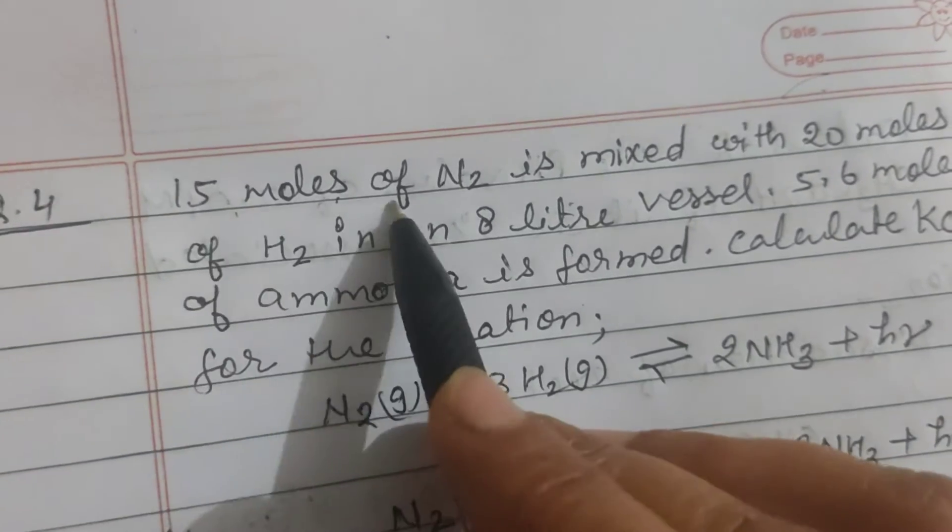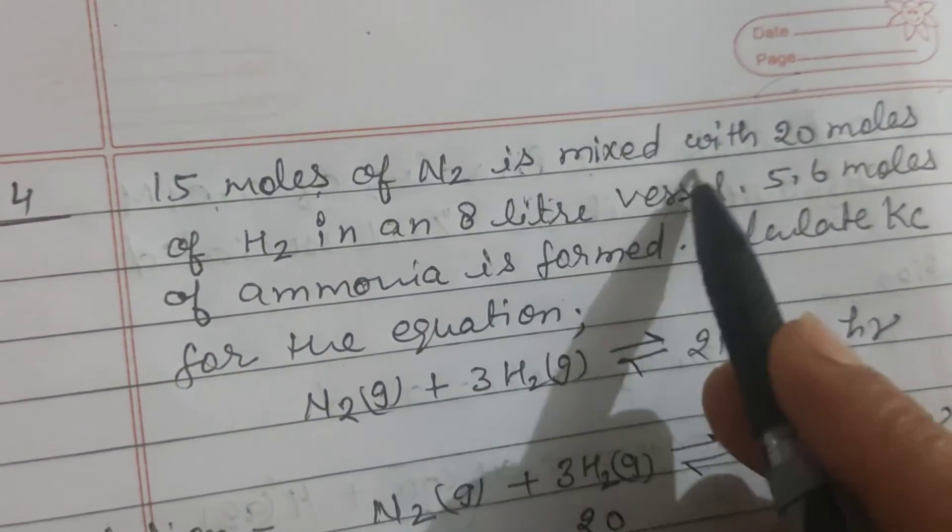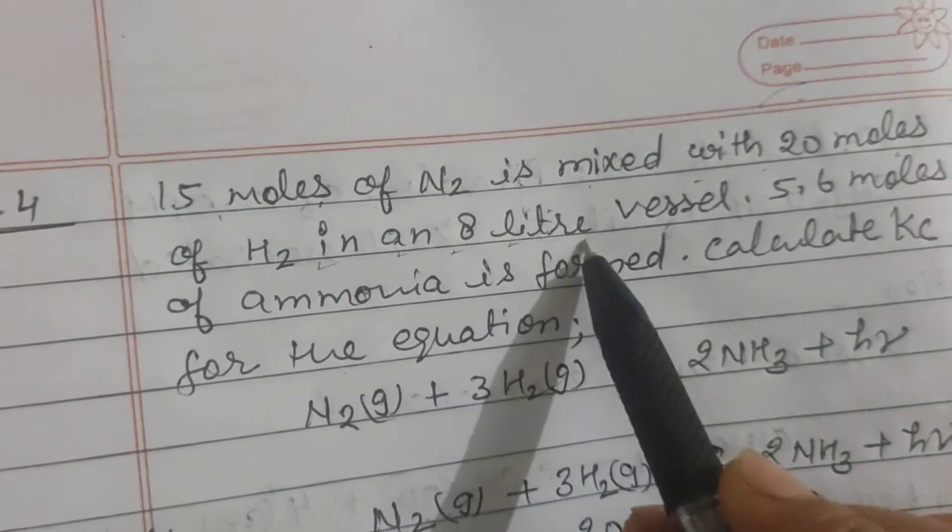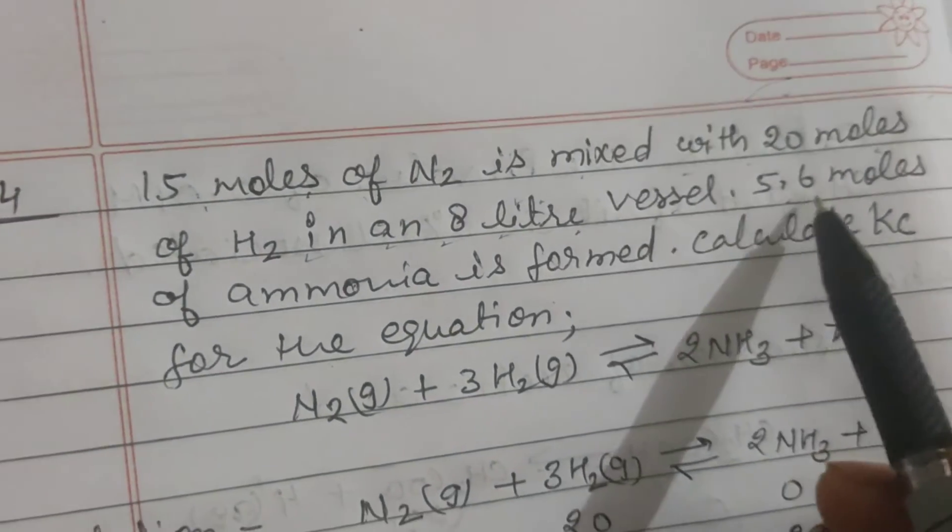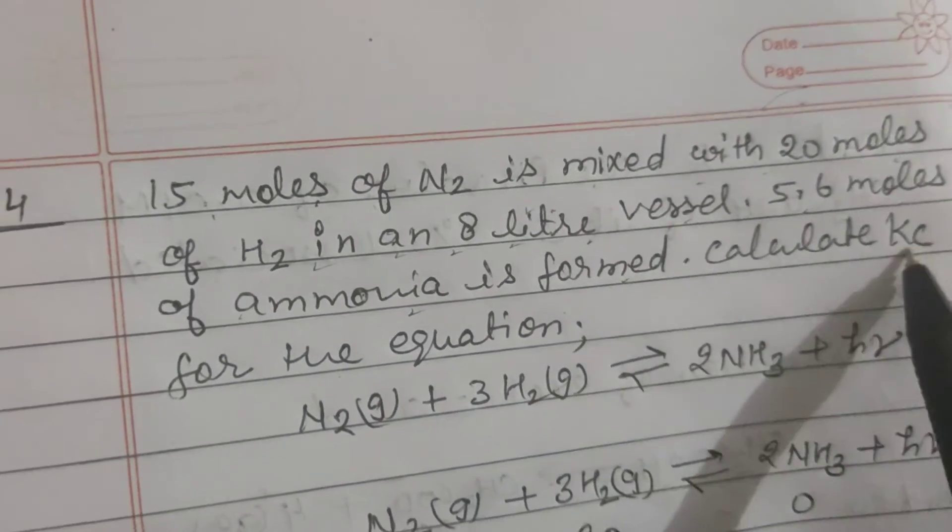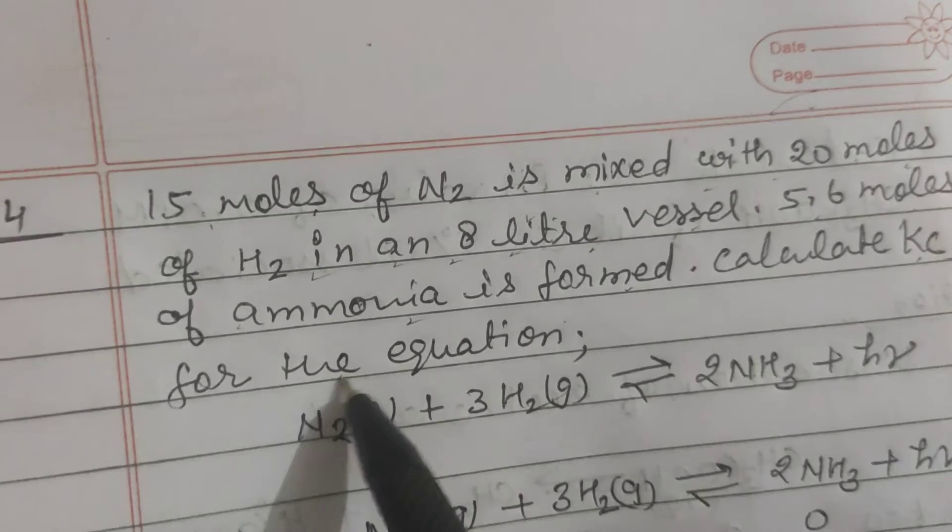Here is the question: 15 moles of nitrogen is mixed with 20 moles of hydrogen in an 8 liter vessel. 5.6 moles of ammonia is formed. Calculate KC for the equation.